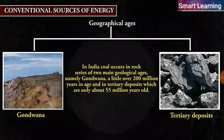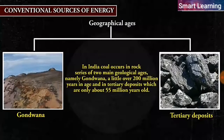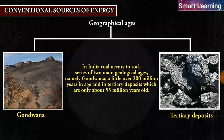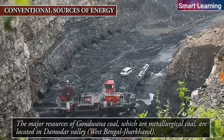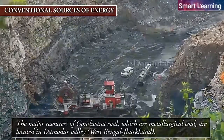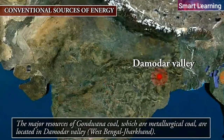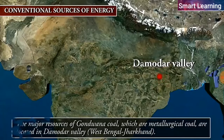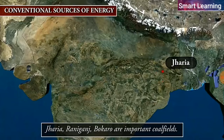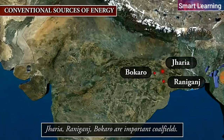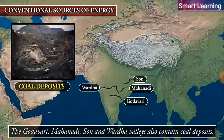In India, coal occurs in rock series of two main geological ages — Gondwana, a little over 200 million years in age, and in Tertiary deposits which are only about 55 million years old. The major resources of Gondwana coal, which are metallurgical coal, are located in the Damodar Valley in West Bengal and Jharkhand. Jharia, Raniganj, and Bokaro are important coal fields. The Godavari, Mahanadi, Son, and Wardha Valleys also contain coal deposits.